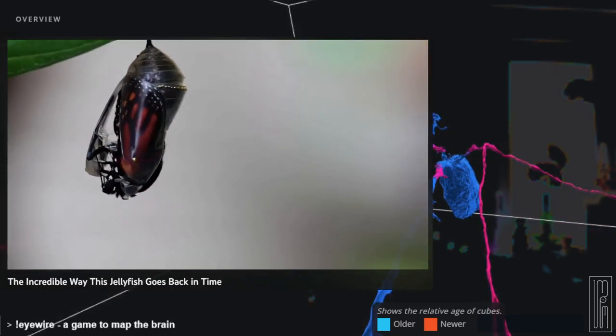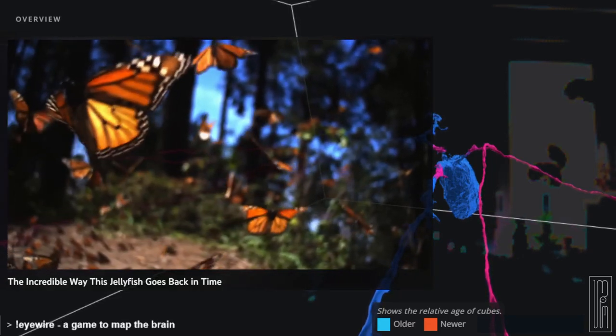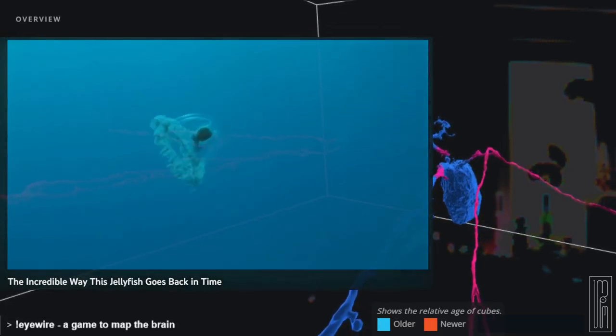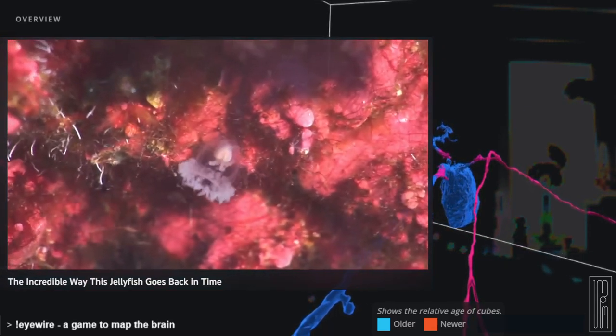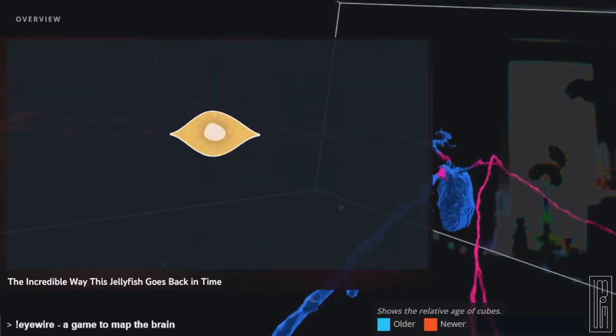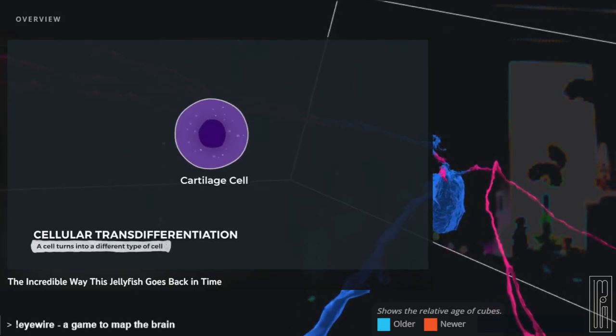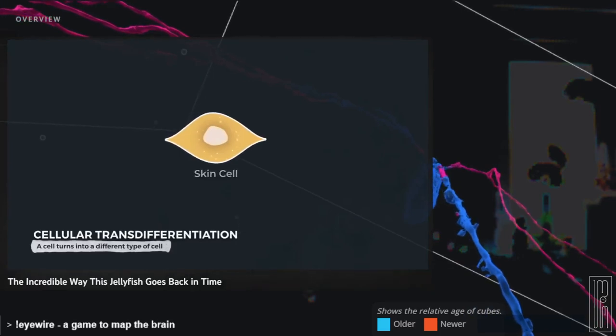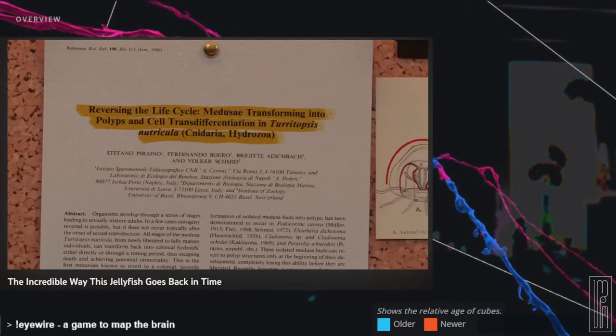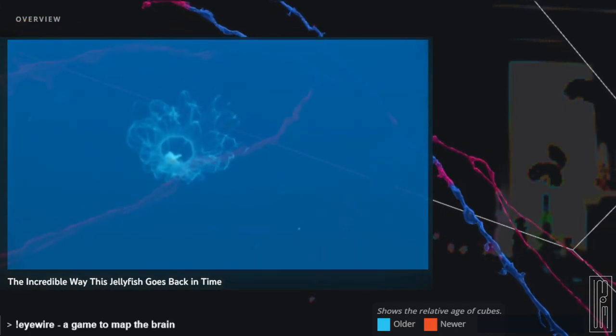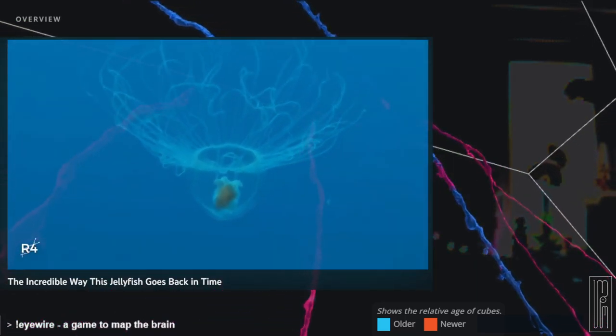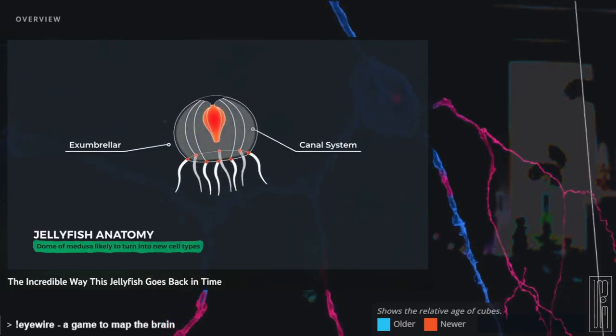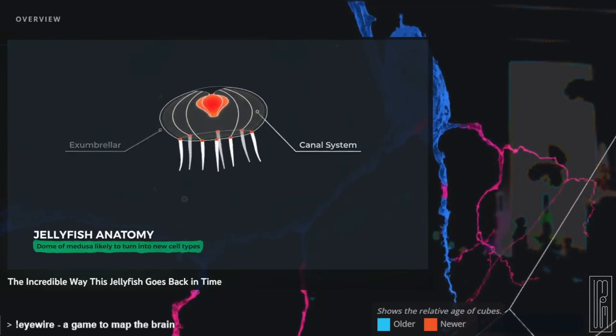This amazing process has never actually been observed in the wild, only in the lab. But there's no reason to think it isn't going on throughout our oceans. So what is going on? How does an adult jelly turn back into a baby? The immortal jellyfish can do this amazing rejuvenation through a process called cellular transdifferentiation. This is when a cell of one type turns into an entirely different type of cell directly, without turning into a neutral intermediate form first. Studies have shown that the medusa doesn't seem to contain stem cells, a type of cell that has the potential to be turned into any kind of cell, so it must be the case that its existing cells are repurposed. Scientists have found that the cells of the top layer of the dome shape of the medusa, and the canal system, basically the jellyfish's digestive system, are the most likely to get turned into new cell types.